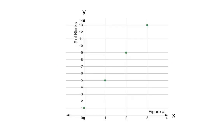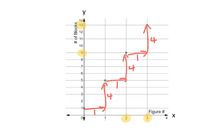Again, we did the exact same thing with the graph. In this graph, we extrapolated the number of blocks in figure 3 and we interpolated the number of blocks in figure 2. You may have noticed the rate of change to be an increase of 4 blocks for every 1 figure. Furthermore, the initial value is 1 block, since that is the number of blocks in figure 0.